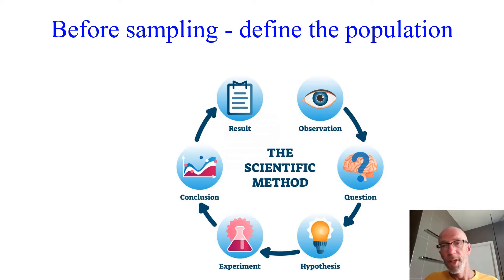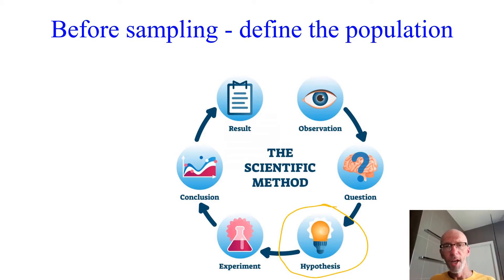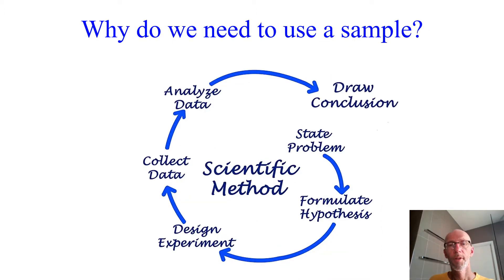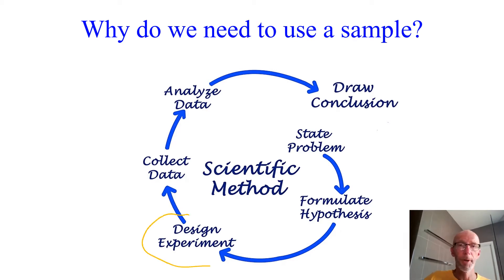We need to determine our population when we're devising our hypothesis, and that's also going to come into play when we're generating a conclusion based on the data that we generate. Now that we've defined our population of interest — young basketball referees — we're ready to design an experiment.